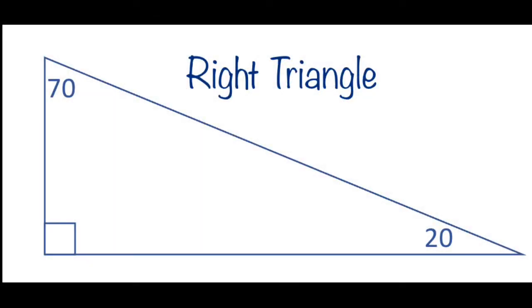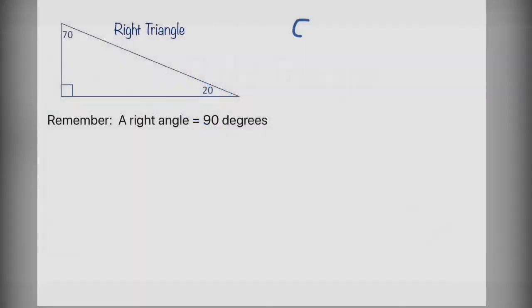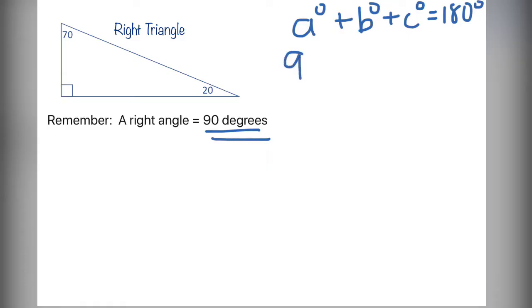Now we are going to look at a right triangle. As you can see, there is 70, 20, and a right angle. Remembering that a right angle is 90 degrees, the theorem again states angle A plus angle B plus angle C equal 180 degrees. By filling in the things we know, we start by saying, oh, we know that a right angle is 90 degrees, so I am going to fill in 90 degrees. Then I am going to add the 70, add the 20, and set that equal to 180.